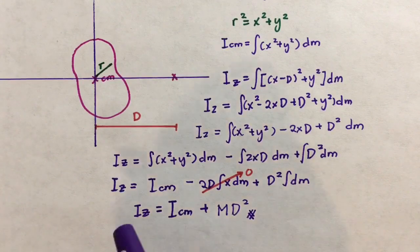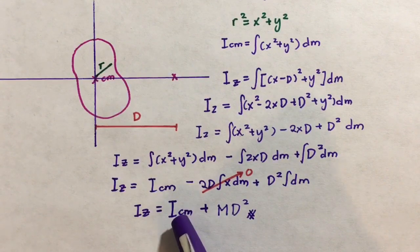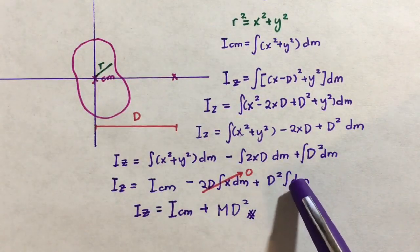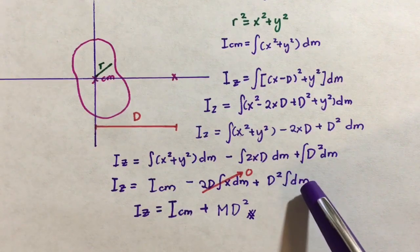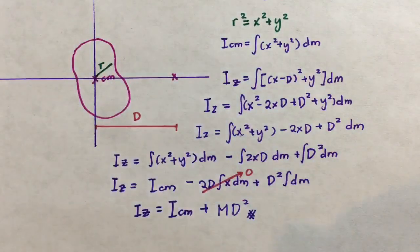Now in finishing up our proof, we can say that the moment of inertia about our new axis is equal to the moment of inertia of our original center of mass plus d-squared times the integral of dm. Now the integral of dm is equal to the sum of the little tiny bits of mass, which should give us the total mass of this shape.